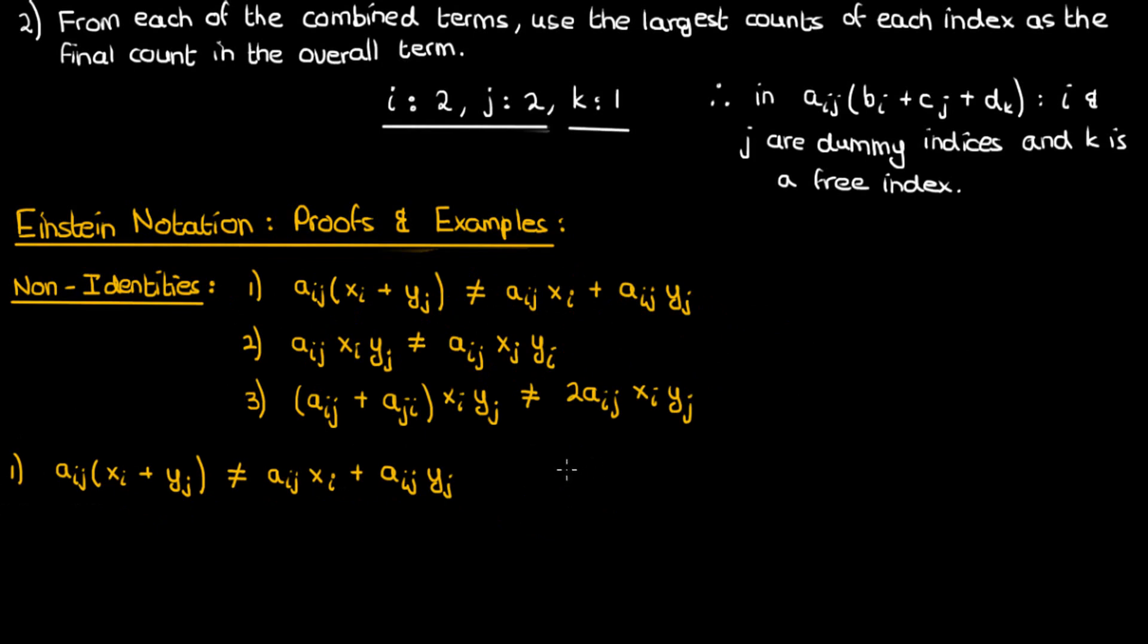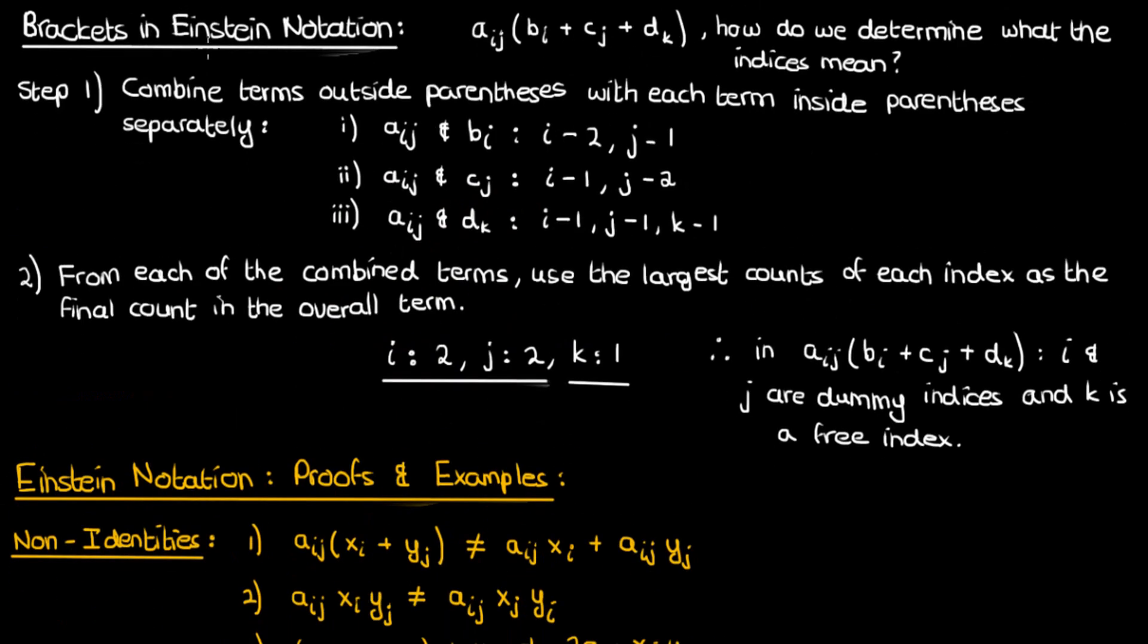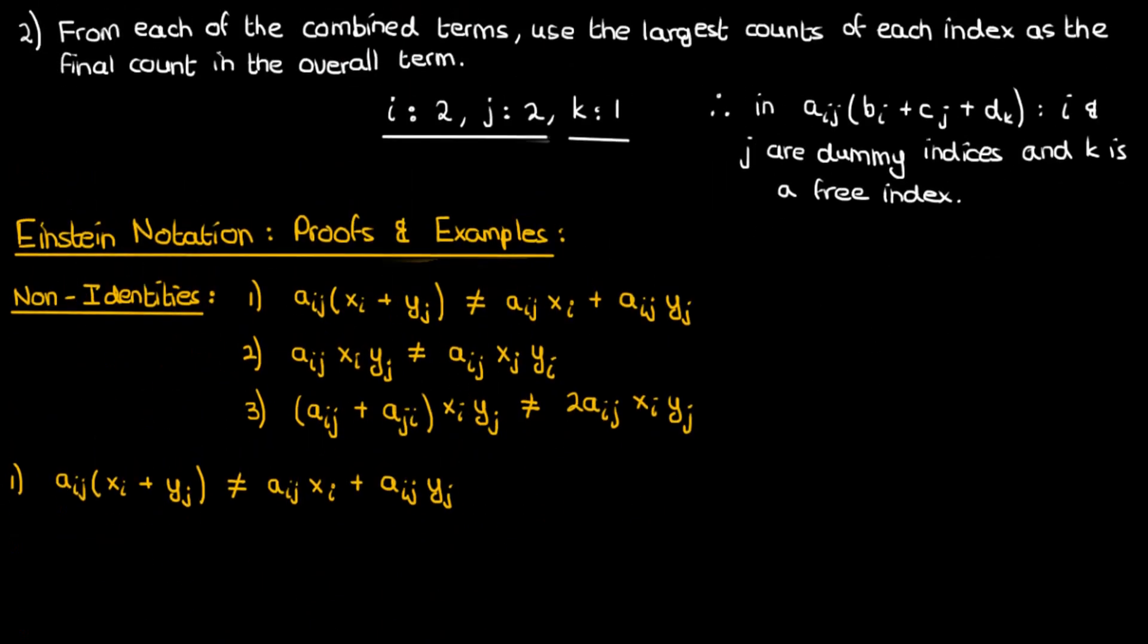On the left-hand side, you have a term involving brackets, so let's apply our bracket analysis to see what indices i and j represent on the left-hand term. Again, we combine aij and xi, and then we combine aij and yj. In the first combination, the index i occurs twice and j occurs once.